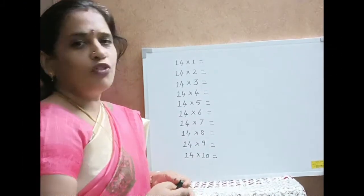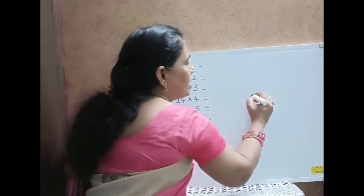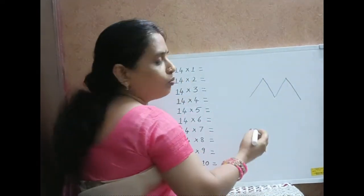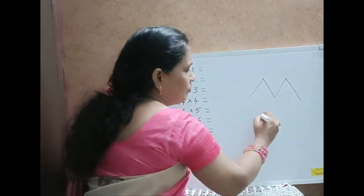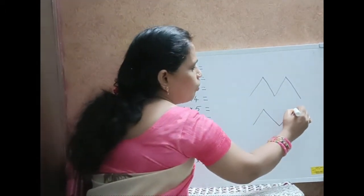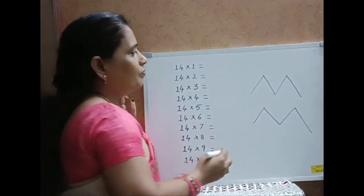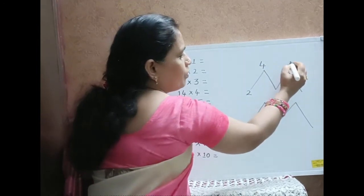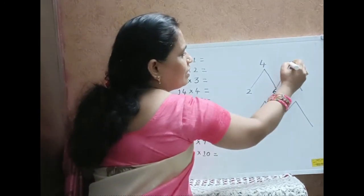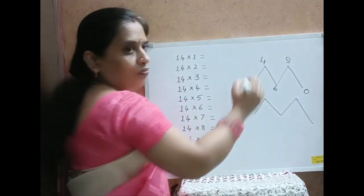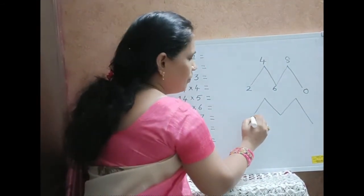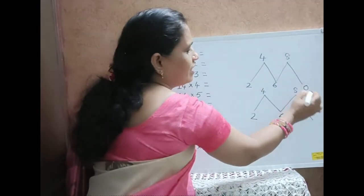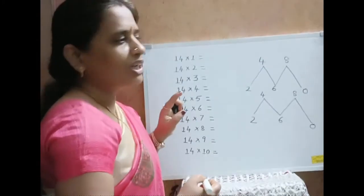For the table of 14, we have to draw an inverted W, or mountain shape, or M — whatever you are comfortable with. Then write the numbers 2, 4, 6, 8, and 0, and repeat the same: 2, 4, 6, 8, 0.